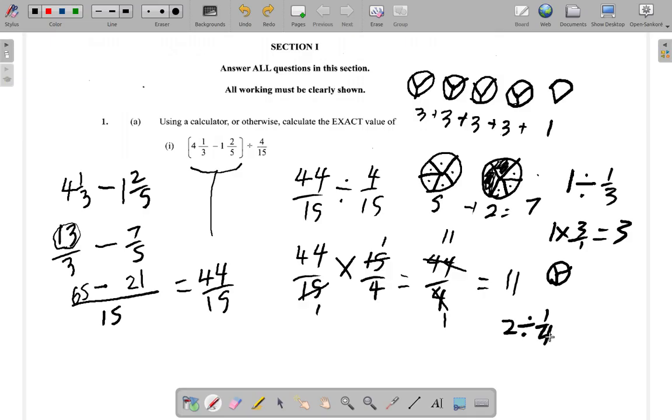One quarter. Based on the fact that when you divide by the fraction, you multiply by the reciprocal of the fraction, it should be two multiplied by four over one. And that gives you eight.